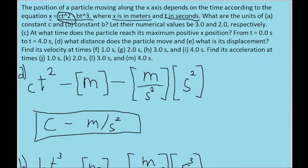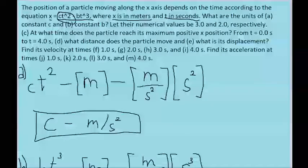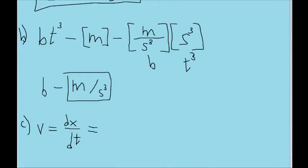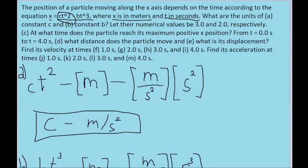Part c asks us about the time at which the particle reaches its maximum x position. Now this is an optimization problem, which will require some calculus. In a nutshell, if we want to maximize a function, we have to take the derivative of that function and set it equal to zero. So I'll take the derivative of the position formula, which is just velocity, since that's how velocity is defined, and it's a pretty simple derivative.